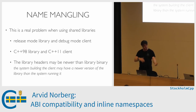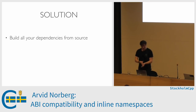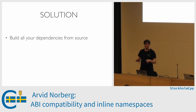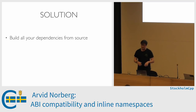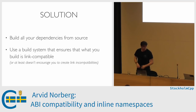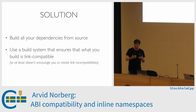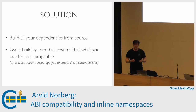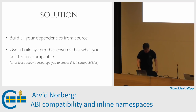Now let's move on to solutions. The main solution that I can't stress enough: you should always build all of your dependencies from source. That's a well-understood and generally agreed-upon solution. However, it's not enough. You also need a build system that actually takes advantage of having the source and makes sure you don't link incompatible object files or libraries together.